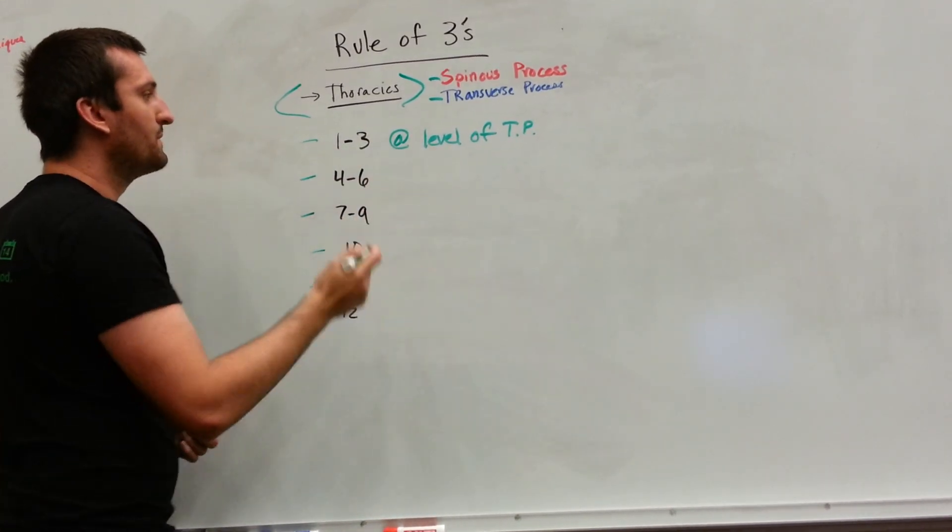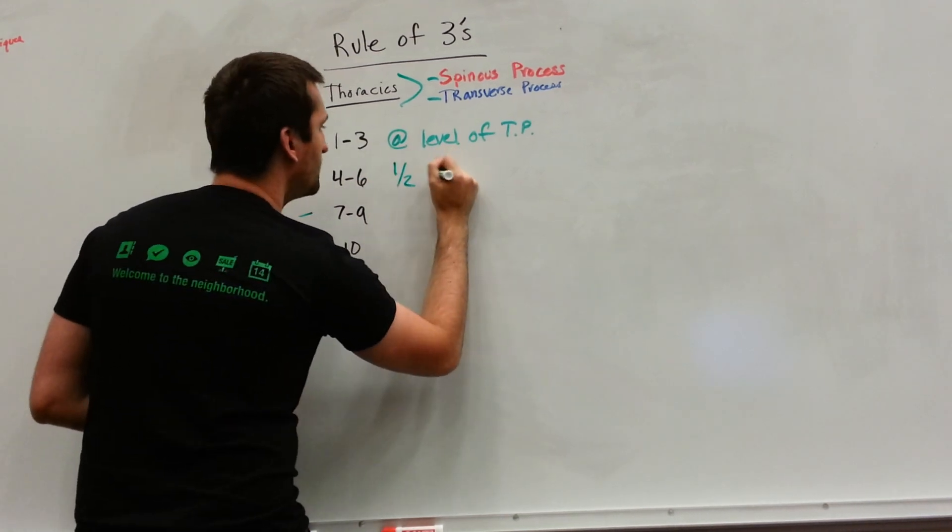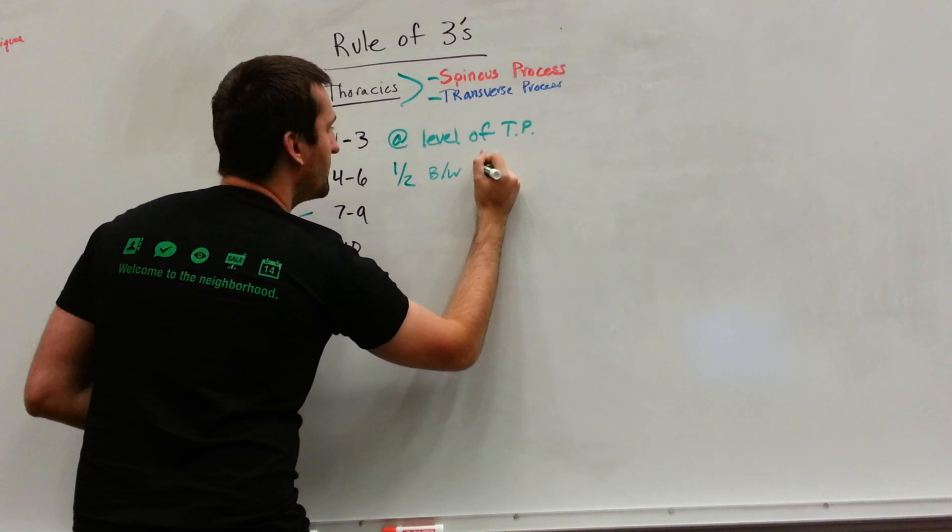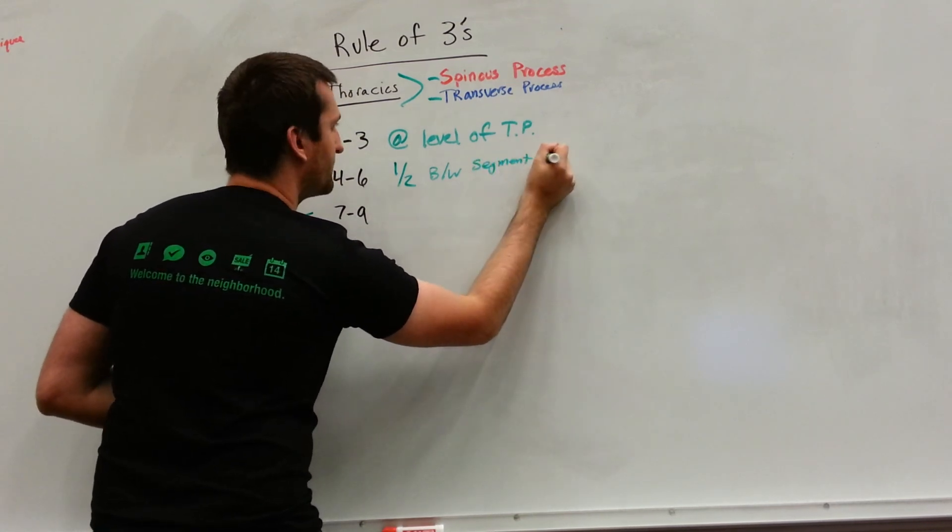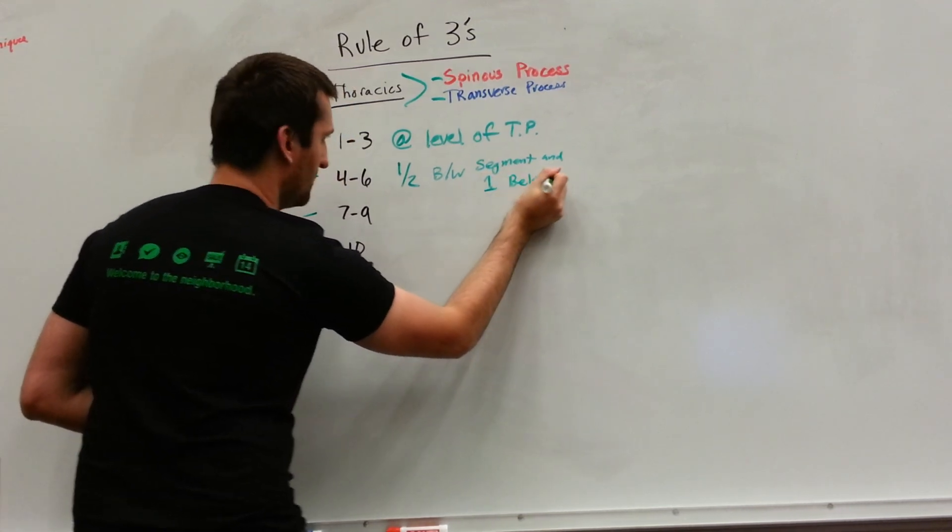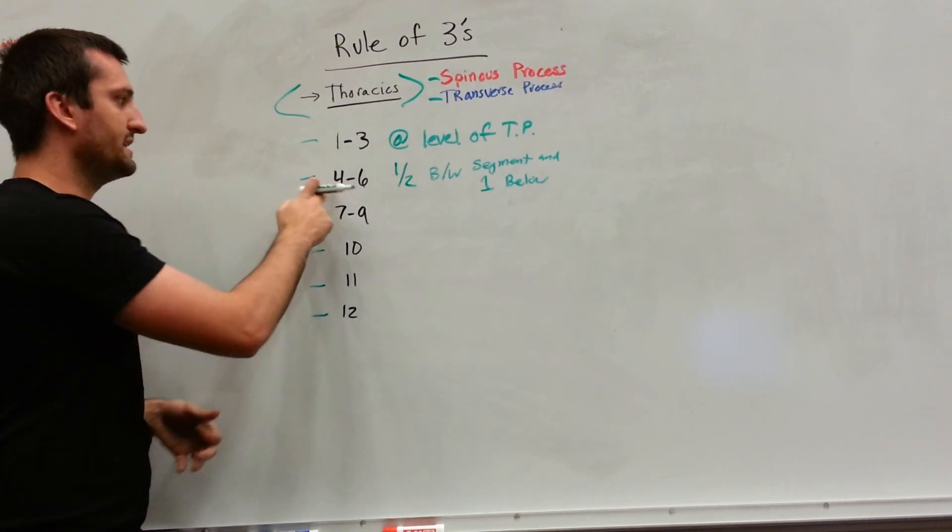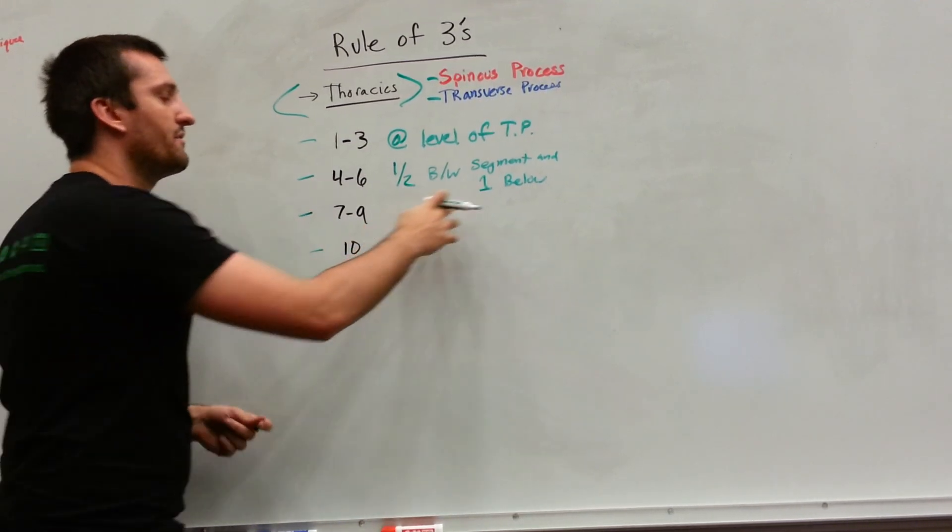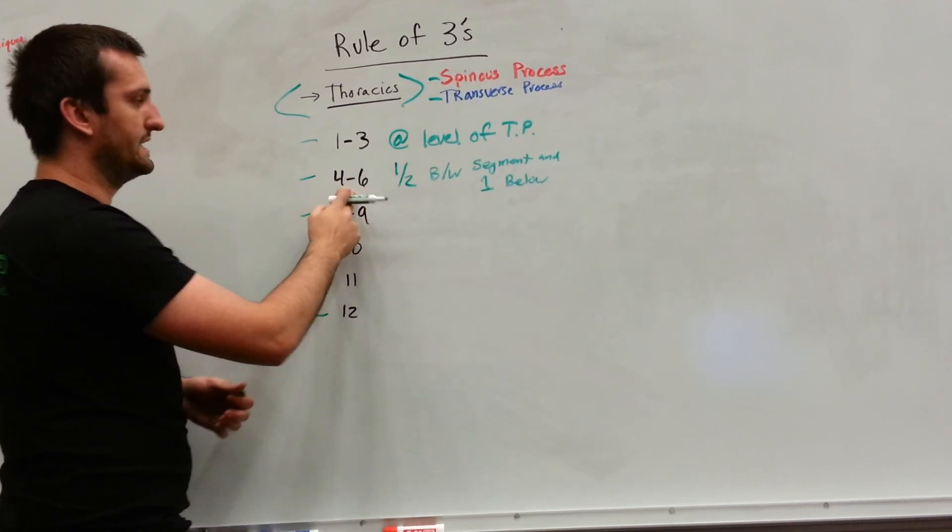Likewise for T2 and T3. For four through six, we'll be halfway between the segment and one below. So halfway between the segment that we're talking about, so let's say T4, and halfway between the segment below, so T4 and T5. So the tip of the spinous process will be at four and a half.